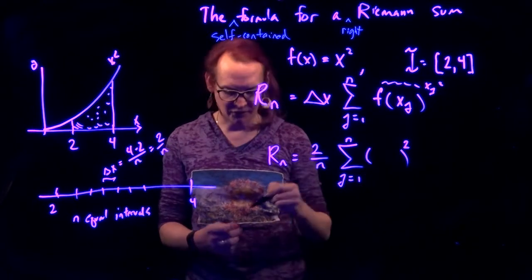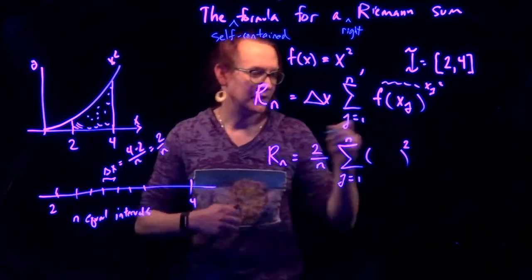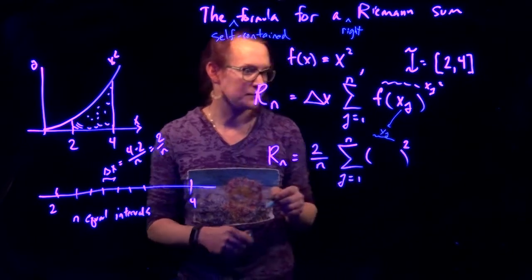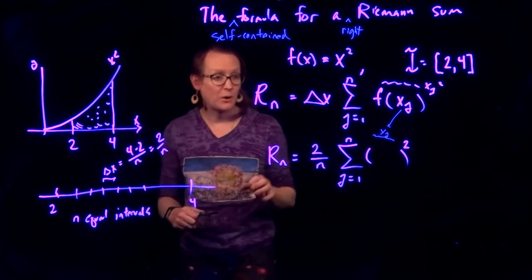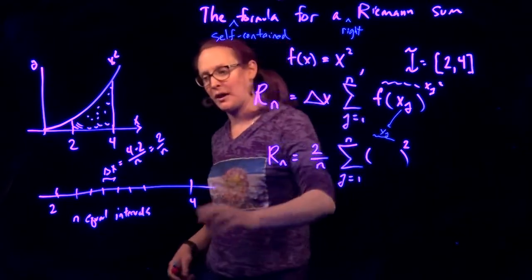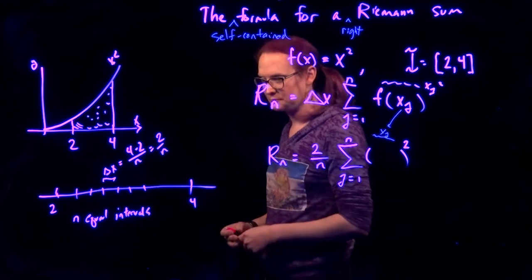So x sub j is the thing that's going to be inside of these. And I want to get x sub j a formula for it so that I don't have to go look things up in a table.